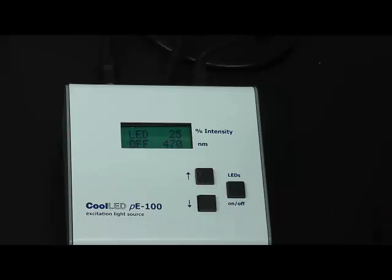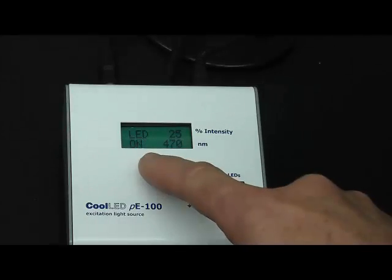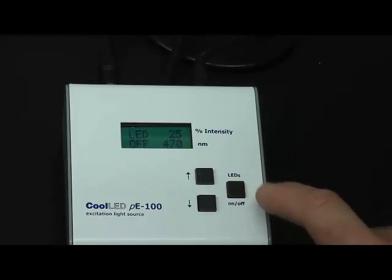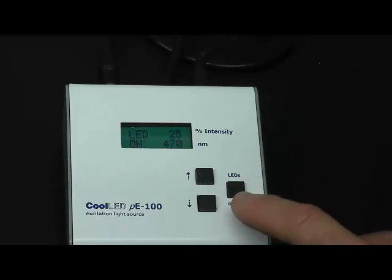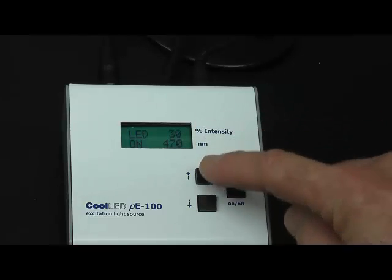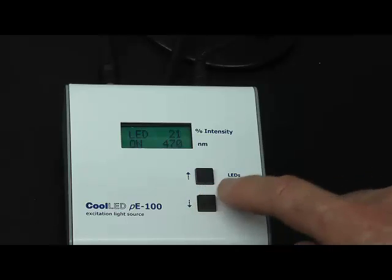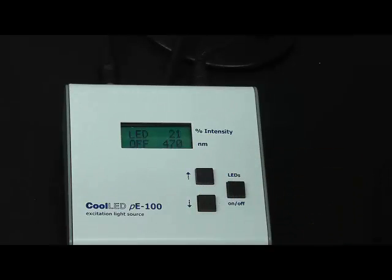The intensity can be controlled with up and down arrows and an on-off button is also available. Turn the unit on or off simply by pressing the button. Intensity can be increased or decreased. Use the minimal amount of light needed to obtain a satisfactory image as the sample can bleach.